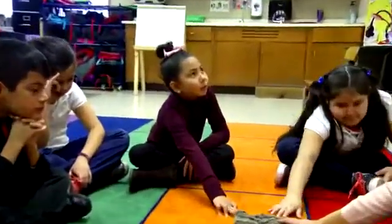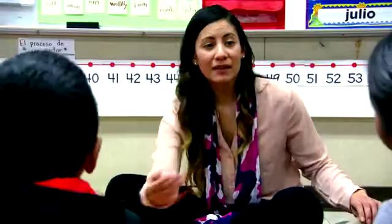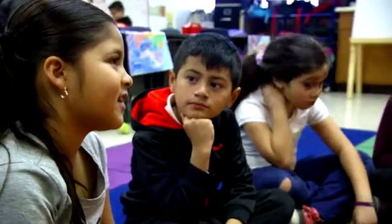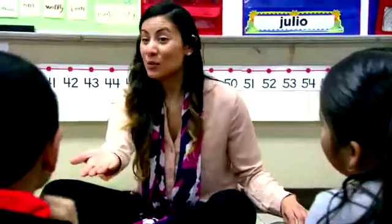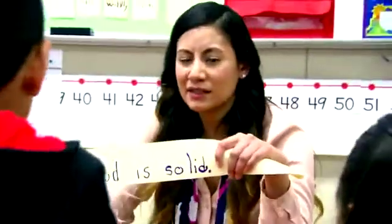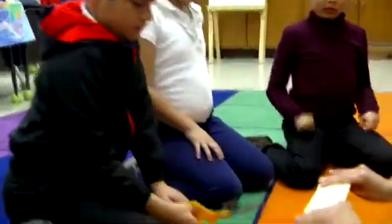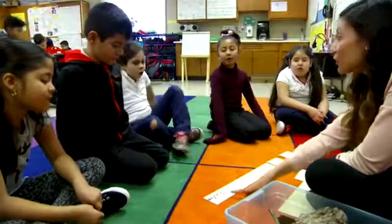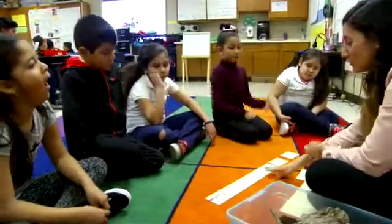A student says the wood is 'a little bit bumpy,' and another tries 'gasposa' in Spanish. The teacher guides: 'How would we say that in English? The wood is rough? The wood is scratchy?' Together they work on condensing: 'The solid wood is used for furniture.' She reminds them they can switch out words: 'Instead of solid, you can say the brown wood is used for furniture.'